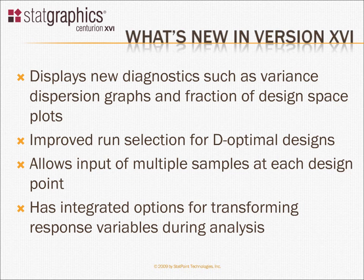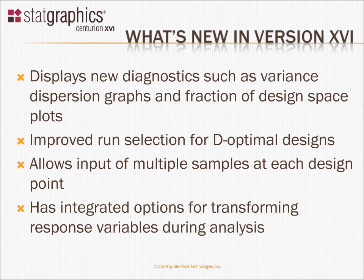In the DOE wizard, you'll find new diagnostic plots, such as variance dispersion graphs and fraction of design space plots, which show you how the prediction variance varies throughout the experimental region. There's an improved run selection when you're creating optimal designs. You can also input multiple samples at each design point and have the wizard automatically calculate means and standard deviations.